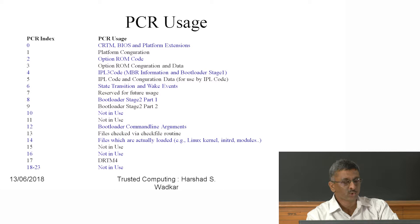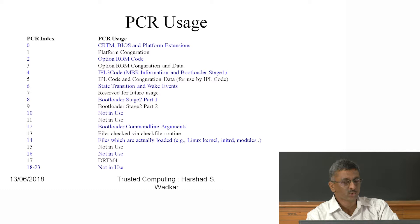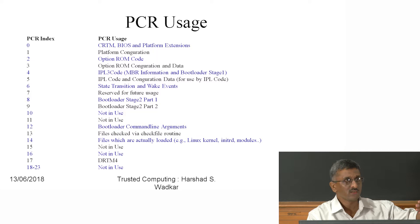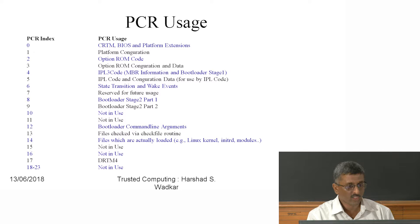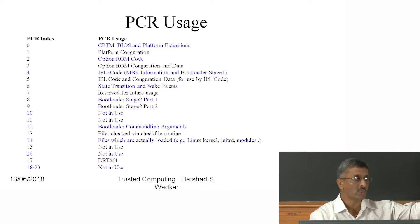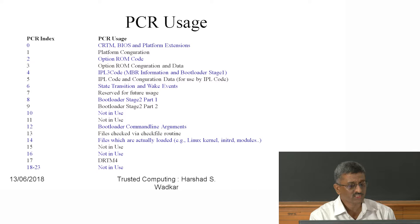PCR 0 to PCR 23 are defined. PCRs 0–13 are used for system purposes: PCR 0 for CRTM, BIOS and platform extensions; PCR 1 for platform configuration; PCR 2 for option ROM code; PCR 8–9 for bootloader stages; PCR 17 for DRTM. PCRs 15–16 and 18–23 are not in use and can be used for application software.